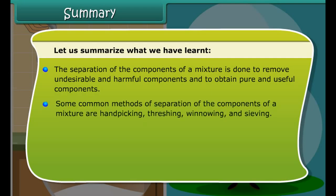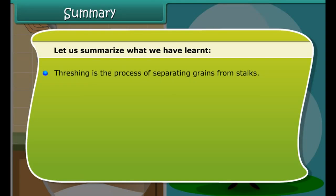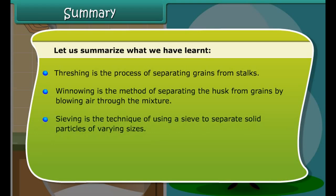Let us summarize what we have learned. The separation of the components of a mixture is done to remove undesirable and harmful components and to obtain pure and useful components. Some common methods of separation are handpicking, threshing, winnowing and sieving. Handpicking is used to separate impurities visible to the naked eye and present in small quantity. Churning refers to agitating or stirring milk or curd to make butter. Threshing is the process of separating grains from stalks. Winnowing is the method of separating the husk from grains by allowing air through the mixture. Sieving is the technique of using a sieve to separate solid particles of varying sizes.